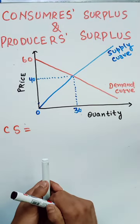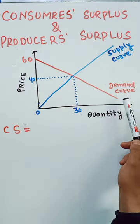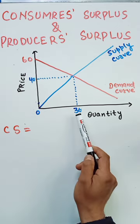How to find consumer surplus and producer surplus? Given the supply curve and demand curve, the equilibrium price is 40 and equilibrium quantity in the market is 30.